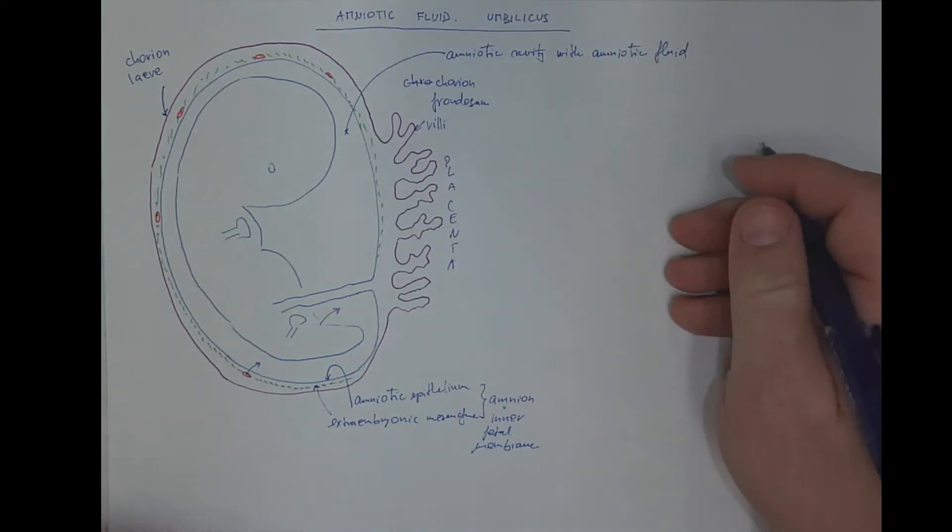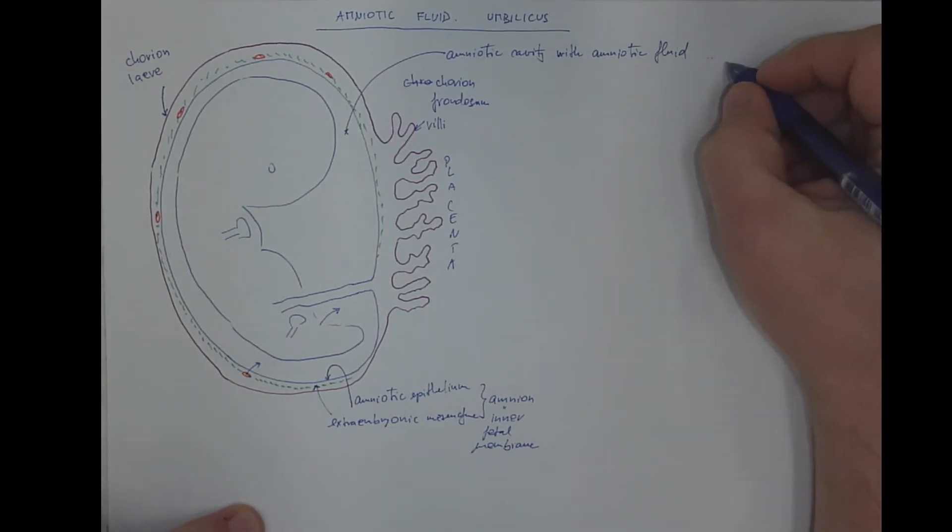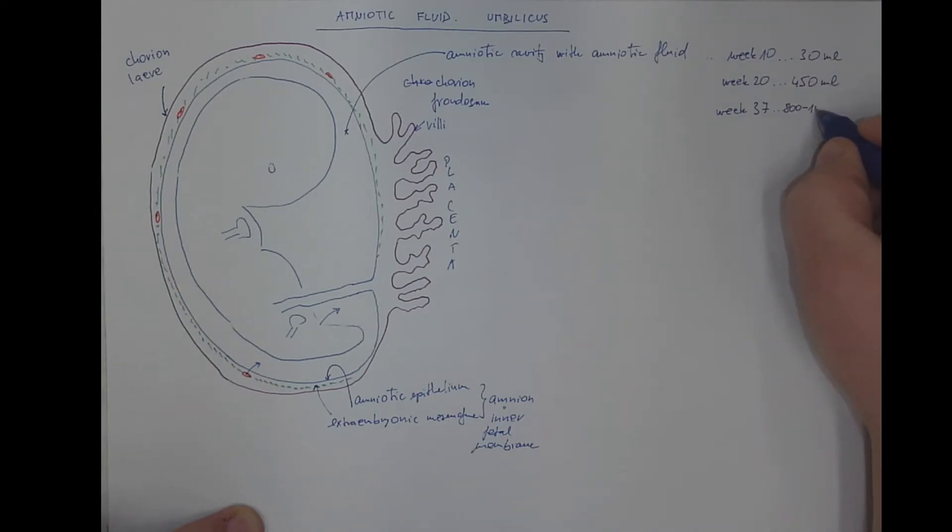And the volume of the fluid increases. For example, after 10 weeks, it's roughly 30 milliliters. In the middle of the pregnancy, in week 20, it's approximately 450 milliliters. And the maximum is in the 37th or 38th week, where the volume reaches up to 1 liter.